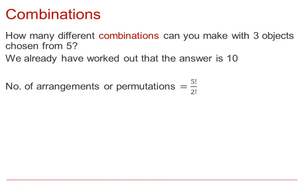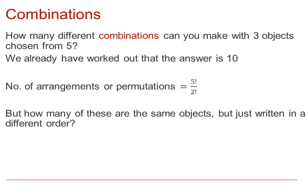So, although the number of arrangements or permutations would indeed have been five factorial over two factorial, or 60, how many of these same objects were just written in a different order?